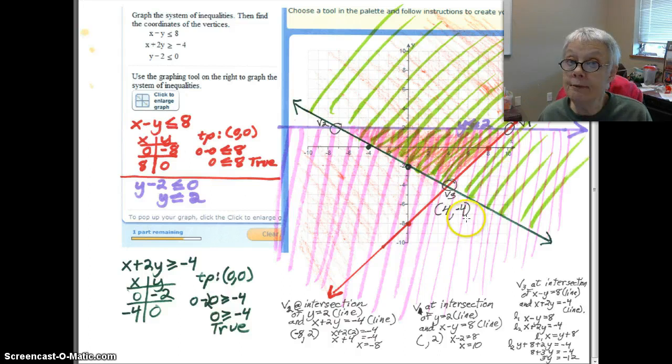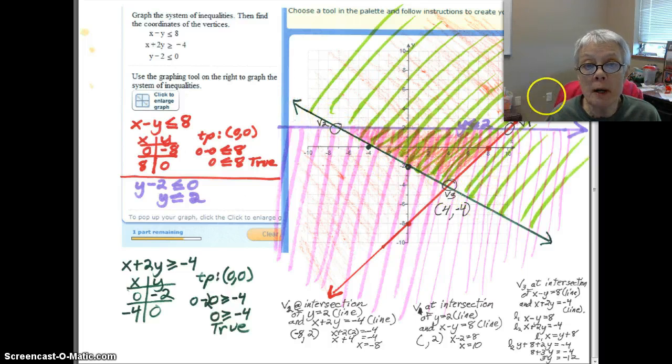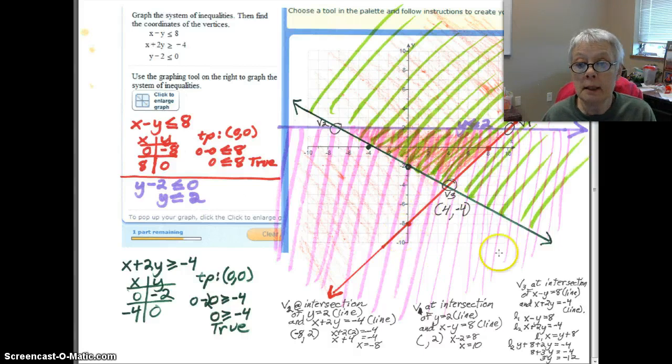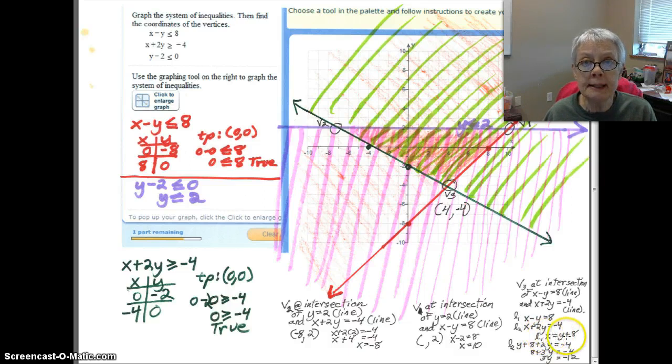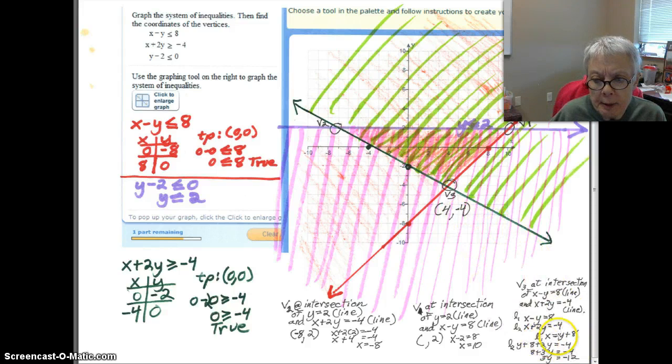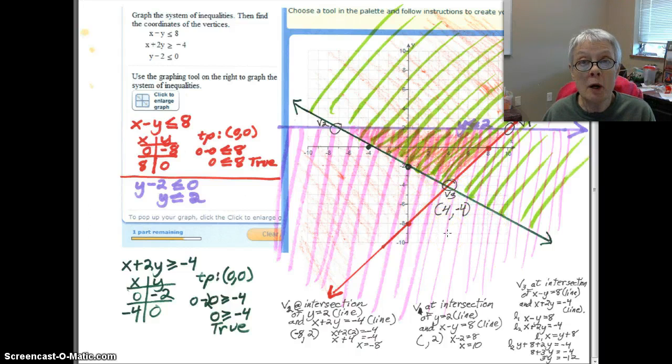Now finally, the more difficult one. Vertex 3 is at the intersection of the line X plus 2Y equals negative 4 and the line X minus Y equals 8. So I solve that system together. I decide to use line 1 as my substitution equation. I just go ahead and say X equals Y plus 8. I substitute Y plus 8 into line 2 for X. I find out that Y is negative 4. At that point, I ran out of space. So mentally, I went back to this line. I put in negative 4 for Y. And negative 4 plus 8 is positive 4. So my third vertex is the point 4, negative 4.